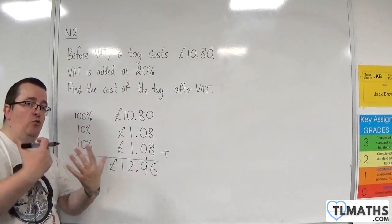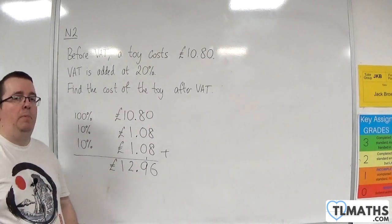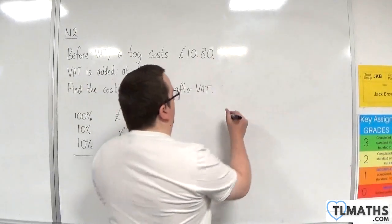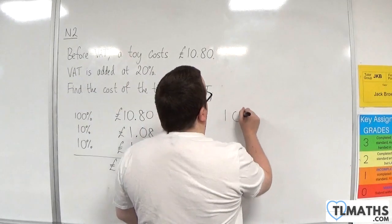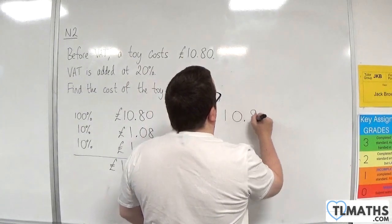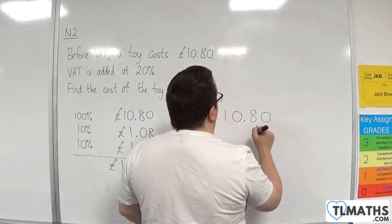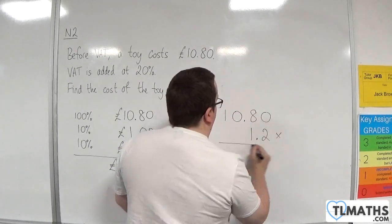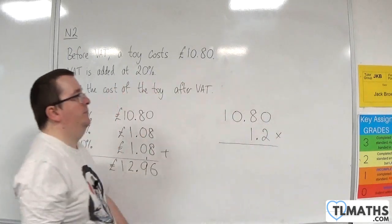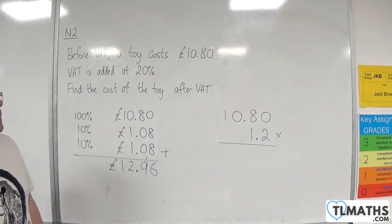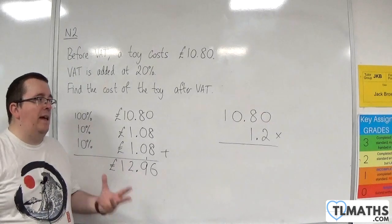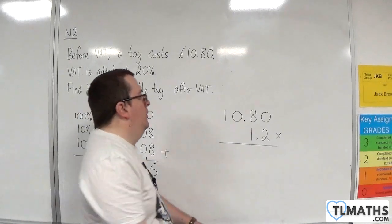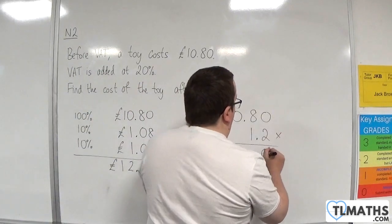Now that's one way of doing it. Alternatively, because I know I need to add twenty percent — I need to increase it by twenty percent — that can be done by multiplying the ten pound eighty by one point two.